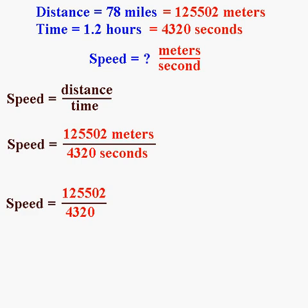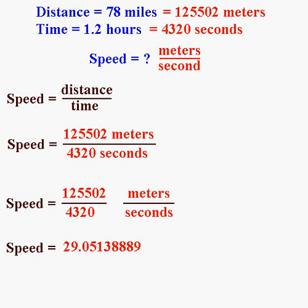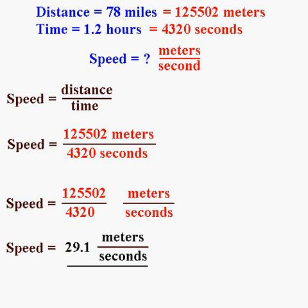I take the numbers and group them separately from the units. So I get 125,502 over 4320, and then meters over seconds. When I take those numbers and divide them, I get 29.05138889. That's way too long, so I'm going to round it to 29.1. When you take chemistry, you'll learn that there are all sorts of rules about rounding — it's called significant figures — but let's not worry about that for right now. The units are meters per second, so my answer is the speed is 29.1 meters per second.